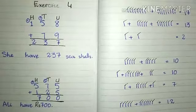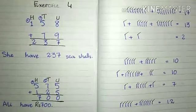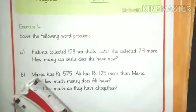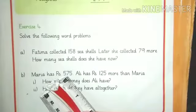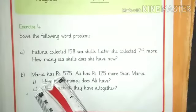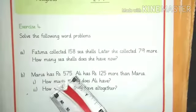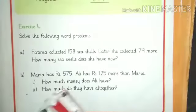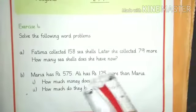Now we will see number B. Question number B: Maria has rupees 575. Maria ke paas 575 rupay hain. Ali has rupees 125 more than Maria. Ali ke paas 125 rupay Maria se zyada hai.